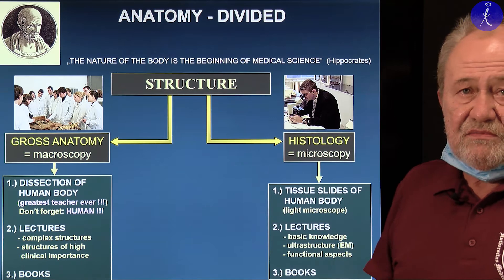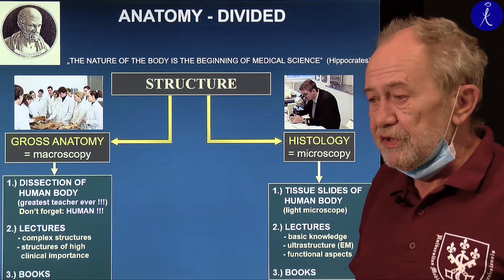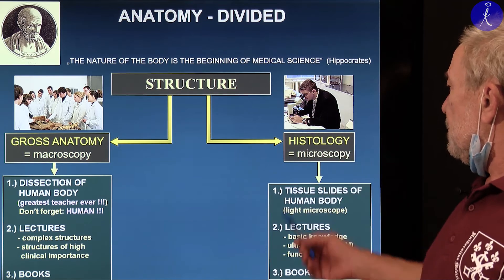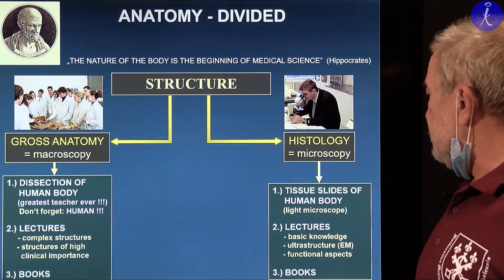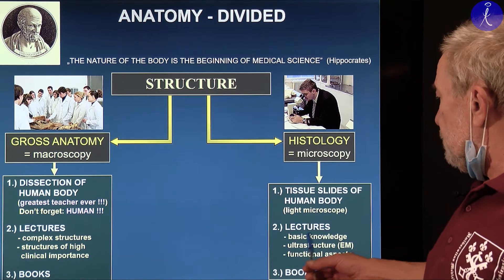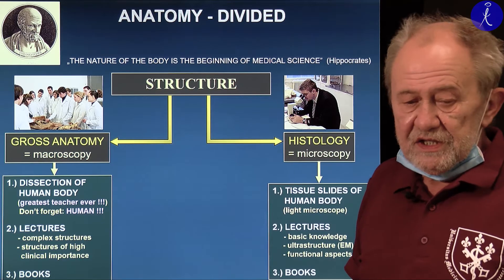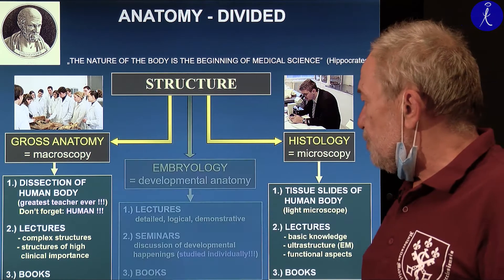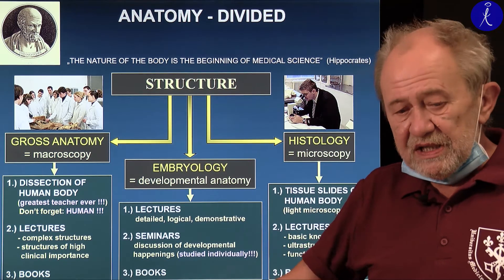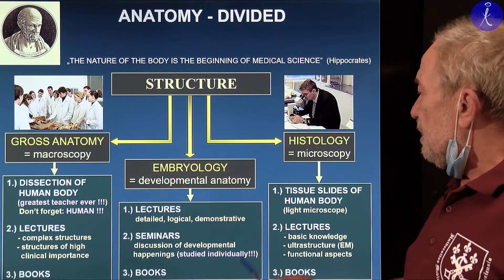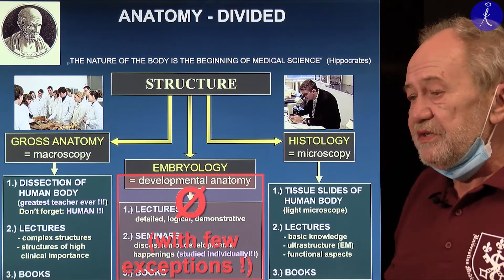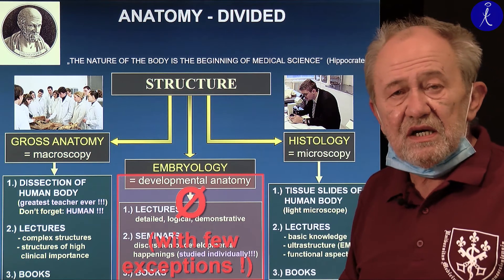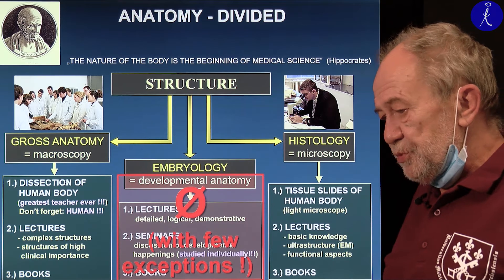The other aspect is microscopy — structures which can only be seen under the light microscope — and this is what you deal with in histology practice using the microscope. You'll also have lectures dealing with that. Ultra structure is to be studied from the lecture material and textbooks. And there's a third component, embryology, which deals with the development of all these structures. Embryology is hardly ever needed — only very small exceptions related to the teeth and face.